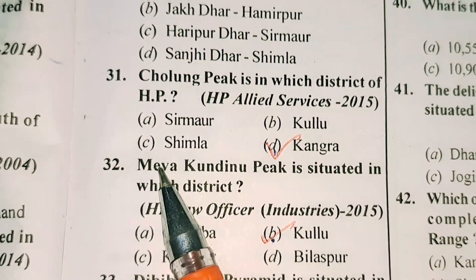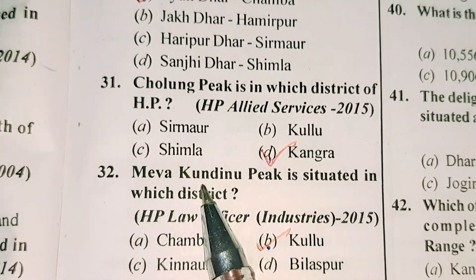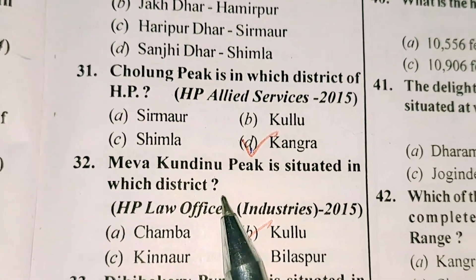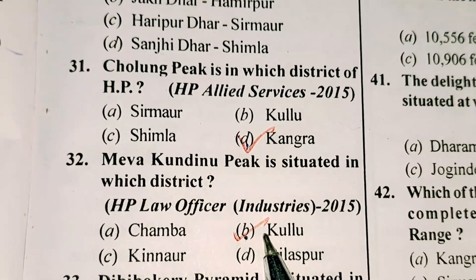Question number 32 is: Meva Peak is situated in which district? Option B is correct — Kullu district.